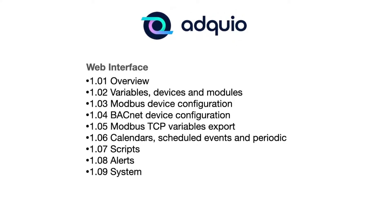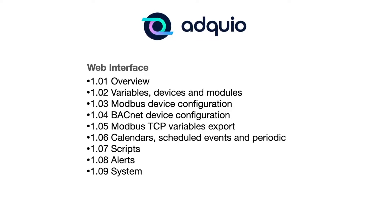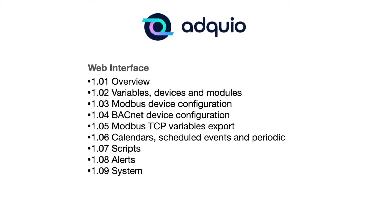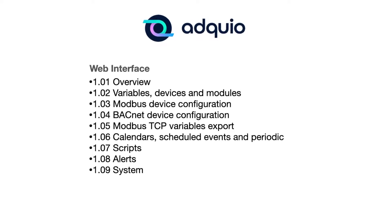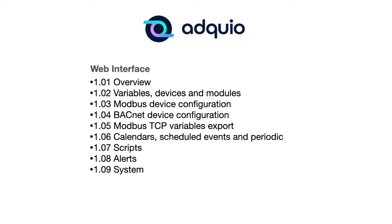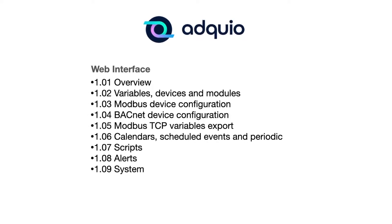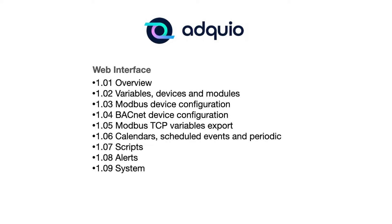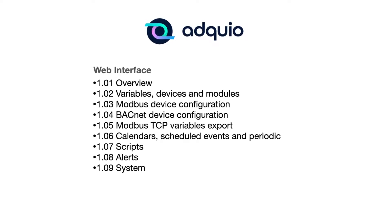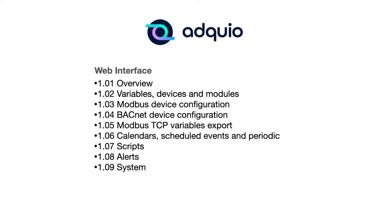We will explain how to configure both Modbus and BACnet devices. We will talk about exporting variables via Modbus TCP. We will explain how to use calendar functions, including programmed and recurring events. We will also take time to discuss scripts, alerts, and a section covering the system.